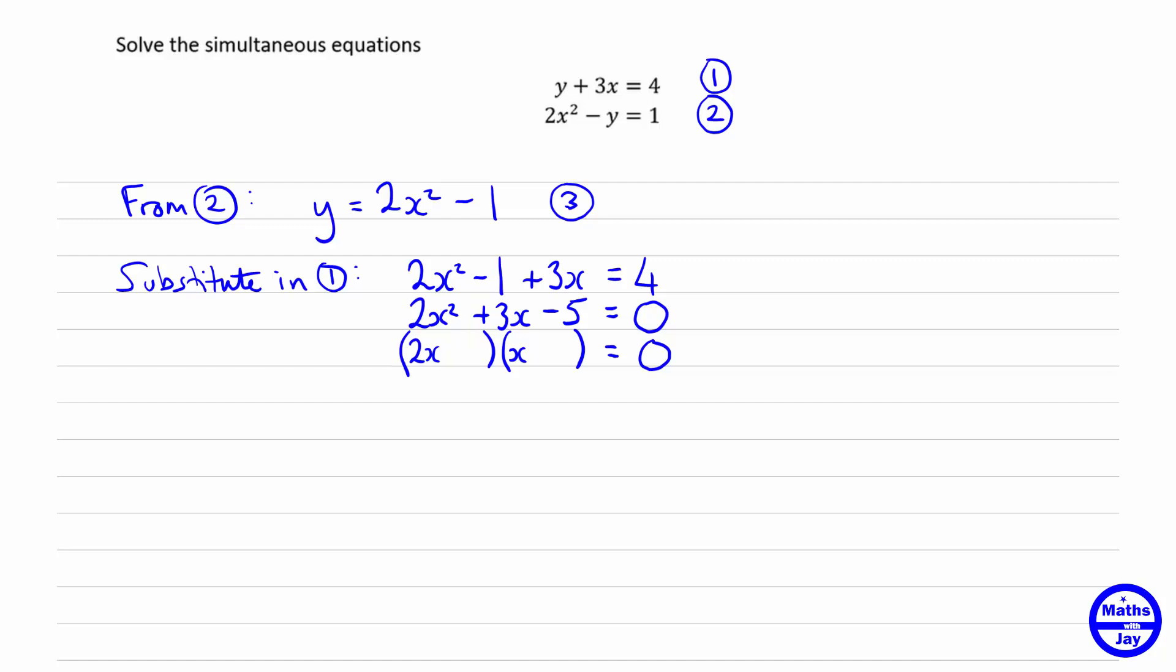So now we know that we must have the 5 in the first bracket and the 1 in the other bracket. So now we're getting 5 times x and 2x times 1, so that's 2x, and we want plus 3x, so we want to have plus 5 and minus 1. So now we can solve the equation. So we know we've either got to have that 2x plus 5 is 0, or x minus 1 is 0. So if 2x plus 5 is 0, 2x must be negative 5, so x is negative 5 over 2, or negative 2.5, and if x minus 1 is 0, then x must be equal to 1.